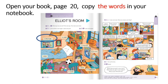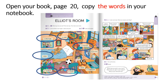Idemo još jednom. A picture — slika. A poster — poster. A lamp — svjetiljka. A chair — stolica. A toy box — kutija za igračke. A bed — krevet. A clock — sat. A desk — stol. A computer — računalo.